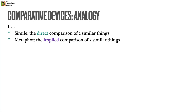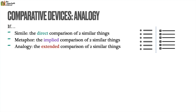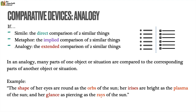If simile is the direct comparison of two things and metaphor is the implied comparison, then what is analogy? An analogy is the extended comparison of two similar things, where many parts of one object or situation are compared to the corresponding parts of another. There would be many facets to an analogy — for example: 'The shape of her eyes are round as the orbs of the sun; her irises are bright as the plasma of the sun; and her glance as piercing as the rays of the sun.' The different facets of her eyes are compared to the different facets of the sun. Simile and metaphor are just comparisons between one thing and another, while analogy is extended.